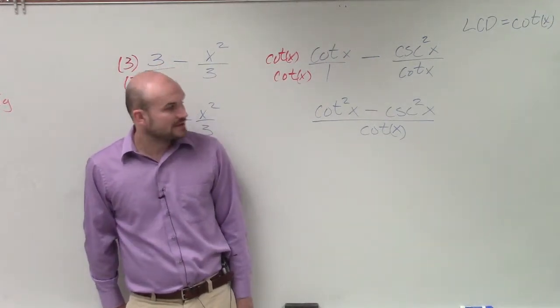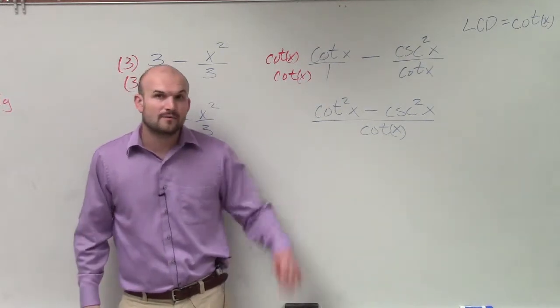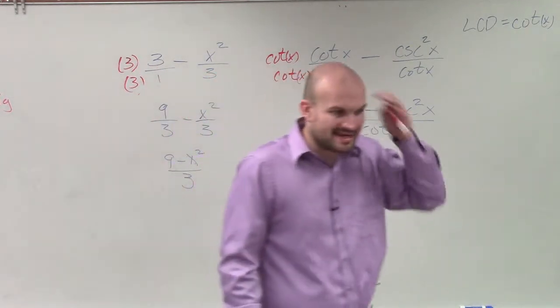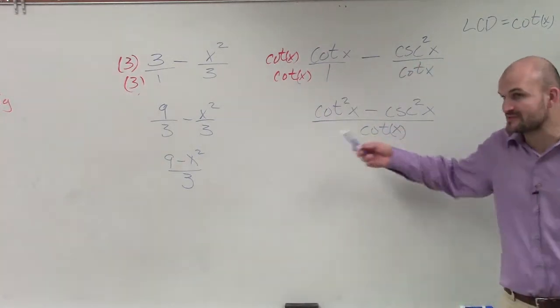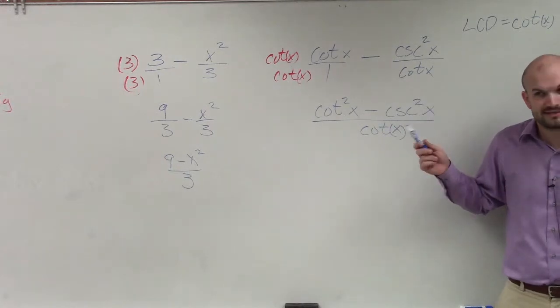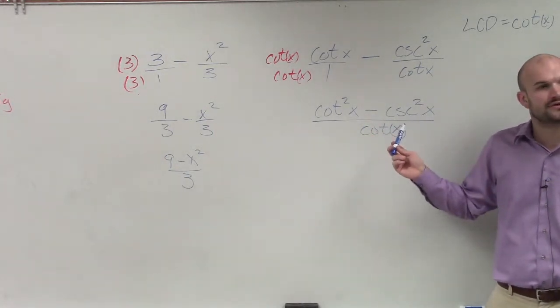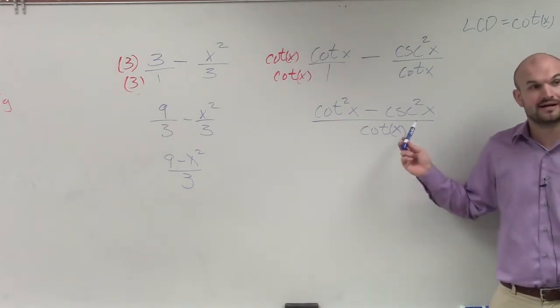So now I have cotangent squared minus cosecant squared. Now, when looking at these, again, I see the squareds. I can rewrite these in terms of sines and cosines if I'd like to, or using my reciprocal identities. But I also know that cotangent and cosecant are related to each other by the Pythagorean identities.